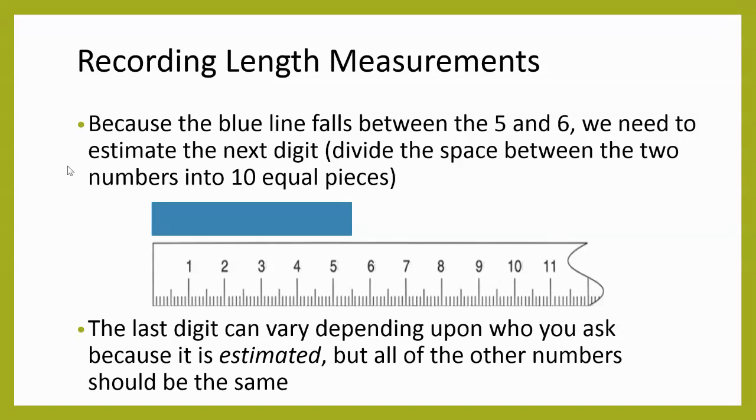Now, depending upon who you ask, you might get slightly different answers. So maybe your neighbor says, I really think it's more like 5.4 or someone else says 5.6. That's okay, you're gonna have slightly different values for that last answer, although they should be kind of clustered together. But the first number, that 5, should be the same because it is an accurate number given to us on our instrument.